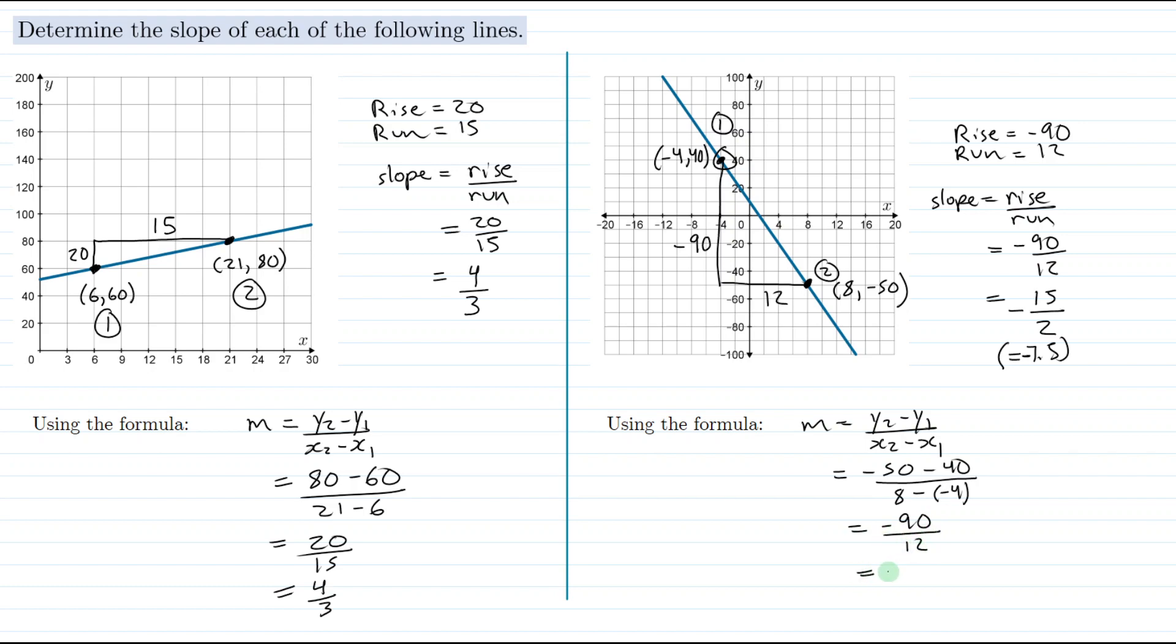We've seen that we can reduce this fraction and write it as negative 15 over 2, which if we choose to we could write as negative 7.5. And there we go - our slope is either negative 15 halves or negative 7.5.